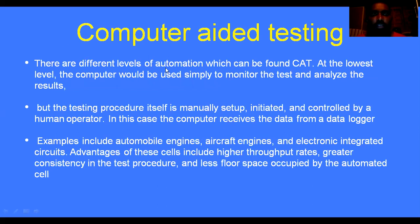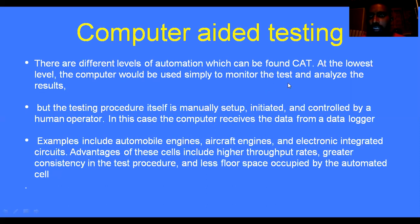There are different levels of automation which can be found in computer-aided testing. At the lowest level, the computer is used simply to monitor the test and analyze the results. That is the major function of computer-aided testing — monitoring the test and analyzing the results.